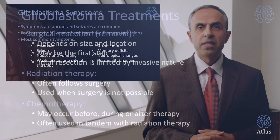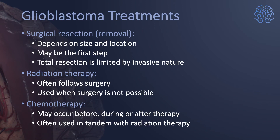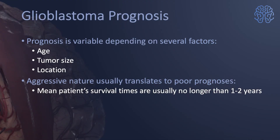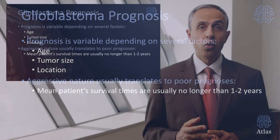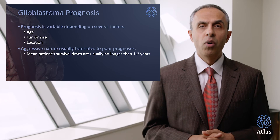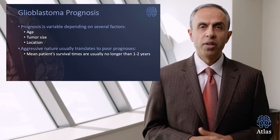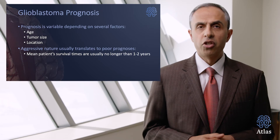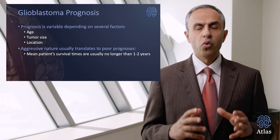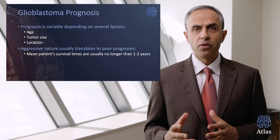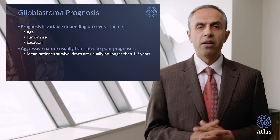The treatment for glioblastoma depends on the size and location of the tumor. Surgery is the first step, followed by radiation and chemotherapy. The prognosis is related to the patient's age, tumor size, and location. Unfortunately, mean survival times are relatively limited, and it is critical for every treatment modality to consider the patient's quality of life and the adverse effects related to treatment during their remaining lifespan.